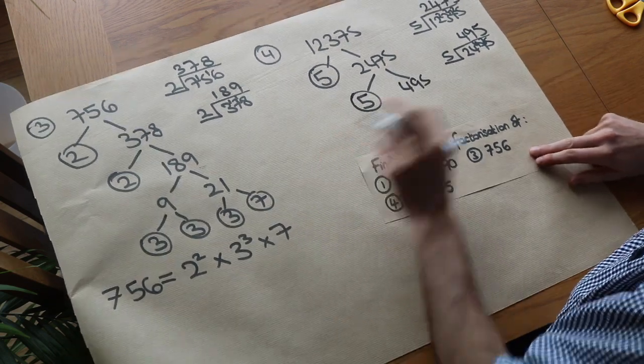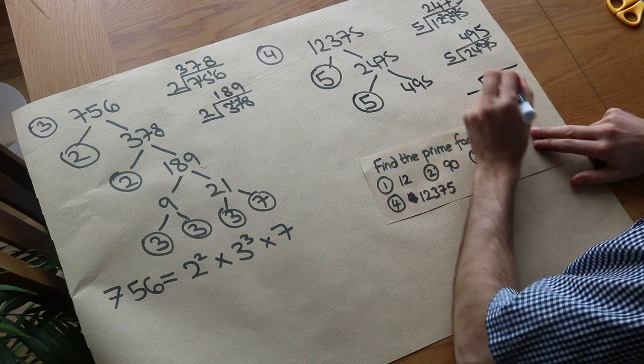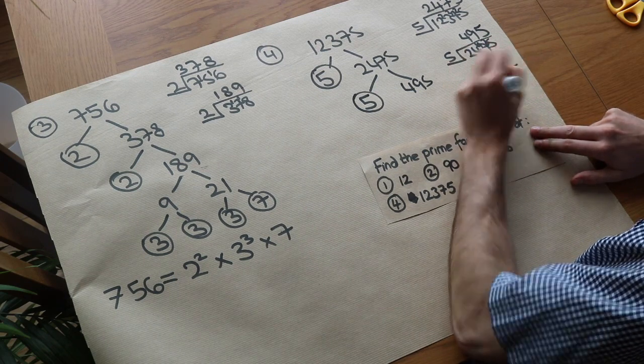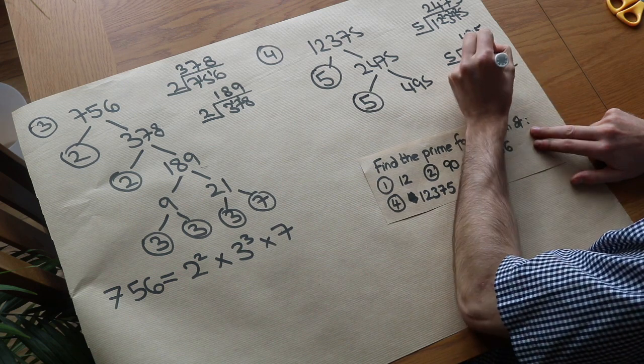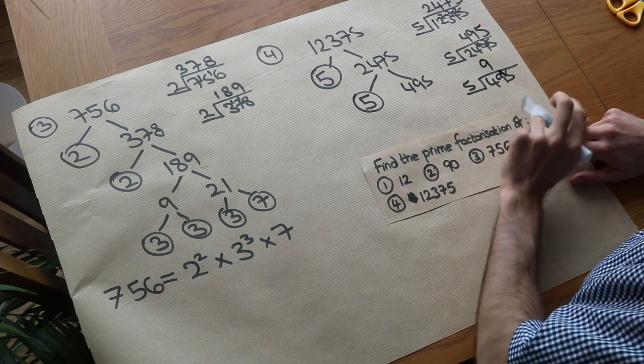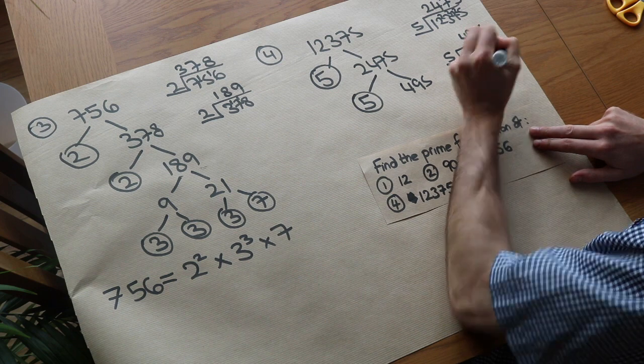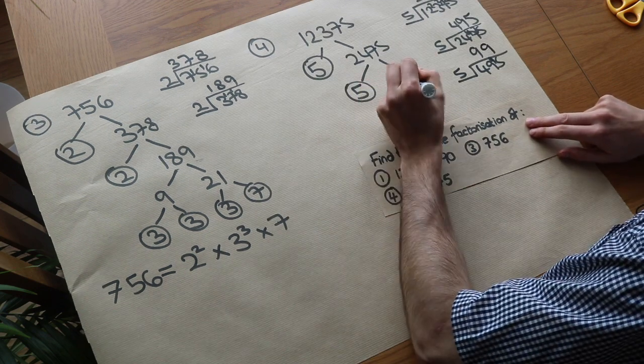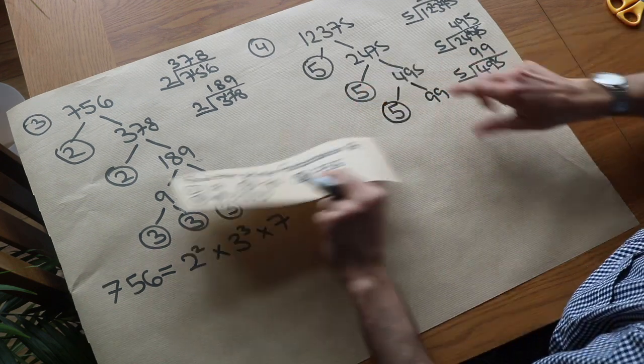Oh, it ends in 5 again, so we can divide by 5. So 495 divided by 5. 5 goes into 49, 9 times, remainder 4. And 5 goes into 45, 9 times. So we've got 5 and 99. 5 is prime. 99 is not.